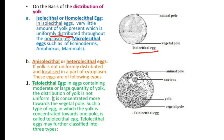Second are the anisolecithal or heterolecithal eggs. If yolk is not uniformly distributed and is localized in a part of the cytoplasm, such eggs are called anisolecithal or heterolecithal eggs. They are further of two types: telolecithal and centrolecithal. In telolecithal eggs containing moderate or large amounts of yolk, the distribution is not uniform — yolk is concentrated more towards the vegetal pole.